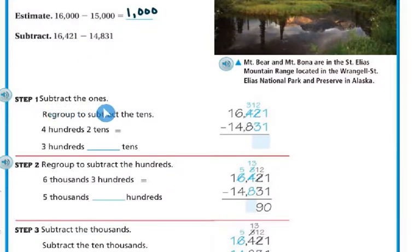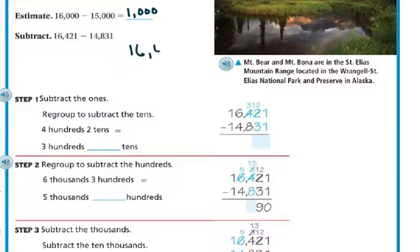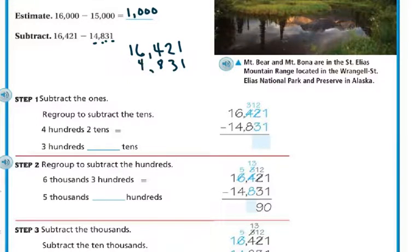First we're going to subtract the ones. We need to line them up because that's super important — you want to make sure you line up your ones, tens place, hundreds, thousands, and ten thousands when subtracting. It's super important that we do this. First we subtract the ones, and we're going to need to regroup.